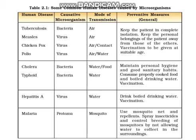Next are cholera and typhoid, diseases caused by bacteria, with the mode of transmission being food or water. After that is hepatitis A, caused by a virus, with the mode of transmission being water. When we drink cold, unheated, uncovered, or contaminated water, this can cause hepatitis A in humans.